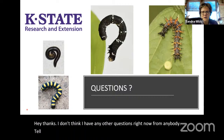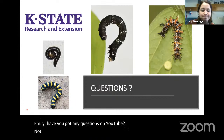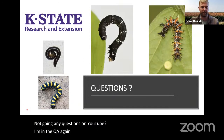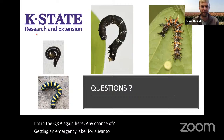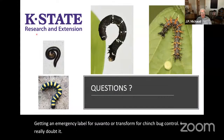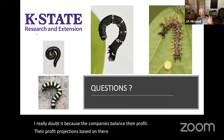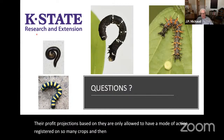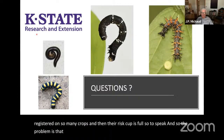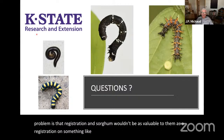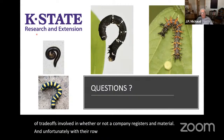A question came in: any chance of getting an emergency label for Sivanto or Transform for chinch bug control? I really doubt it, because the companies balance their profit projections based on how many crops a mode of action can be registered on — the risk cup is full, so to speak. Registration on sorghum wouldn't be as valuable to them as a registration on turf or vegetable crops. And that's also probably why we have so few miticides registered for corn — row crops are far down the list in terms of desirable market.